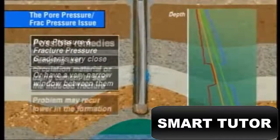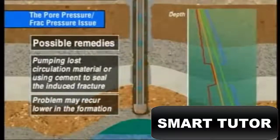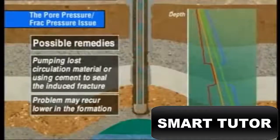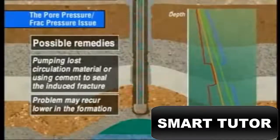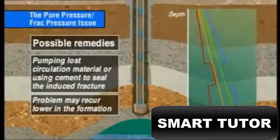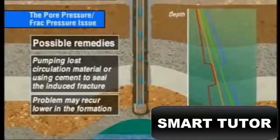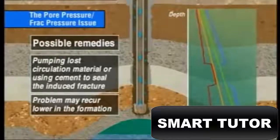To try to overcome the problem, techniques such as pumping lost circulation material or cement to seal the induced fracture may allow drilling to proceed. However, after drilling ahead, the problem may recur lower in the formation and require placement of multiple cement plugs.